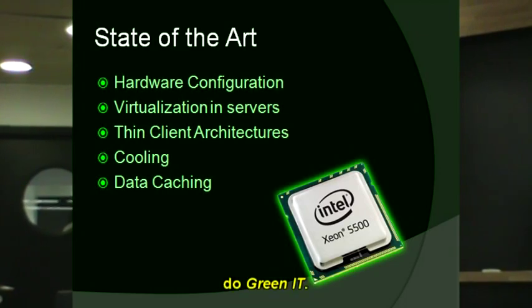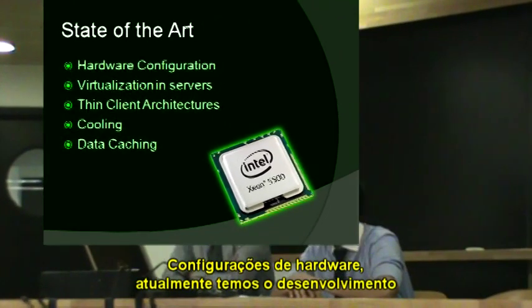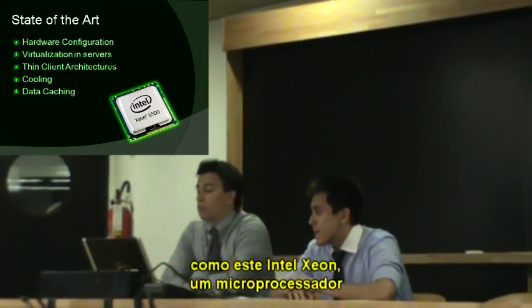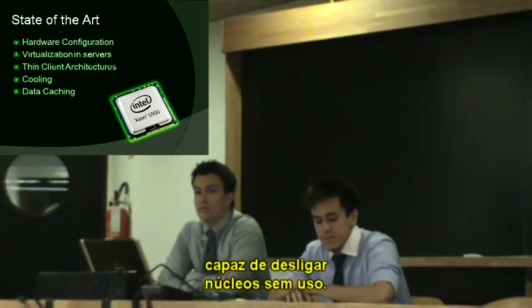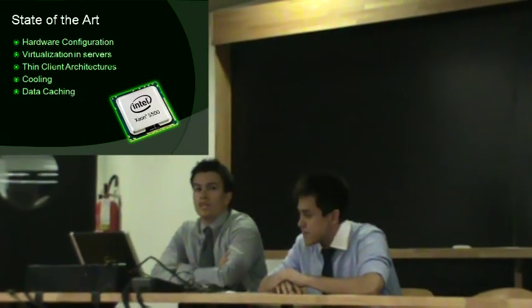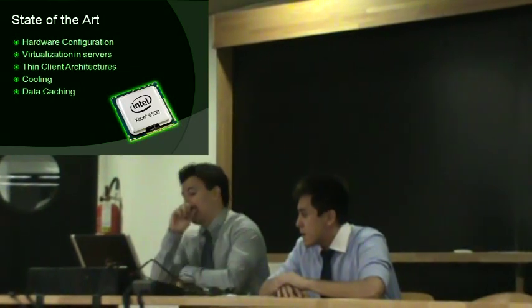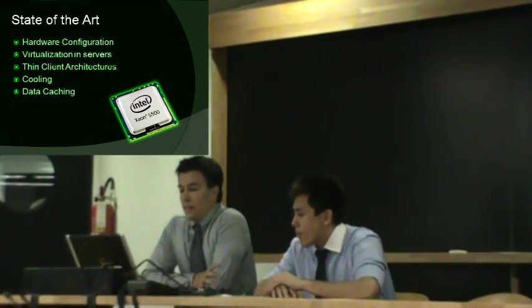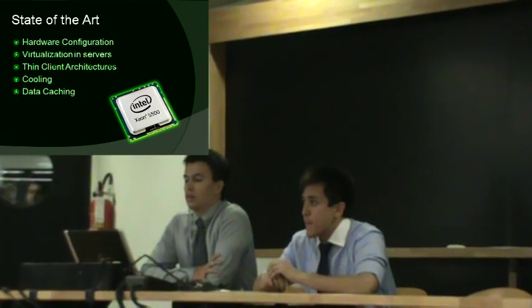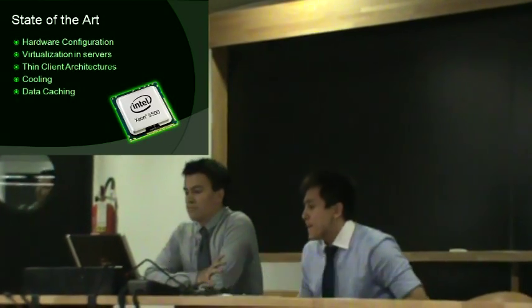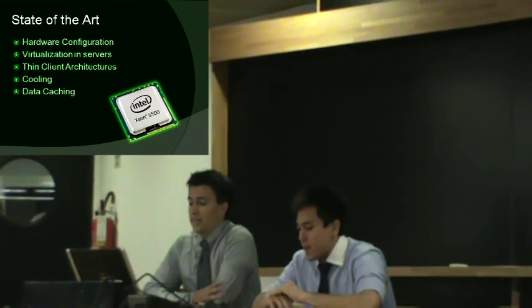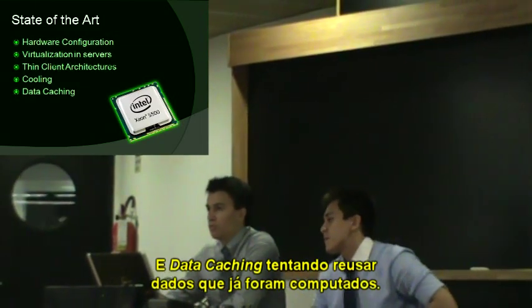State of the art of GreenIT — hardware configuration: nowadays we have development of low-power components, like this Intel Xeon, a microprocessor capable of powering off unused cores. In other parts, we have virtualization in servers, trying to improve the usage of hardware resources. In prime architectures, with the reduction of complexity in prime equipment, centralizing the computation power. Cooling, to improve the control of heat dissipation inside data centers. The focus of our thesis is data caching, trying to reuse already computed data.